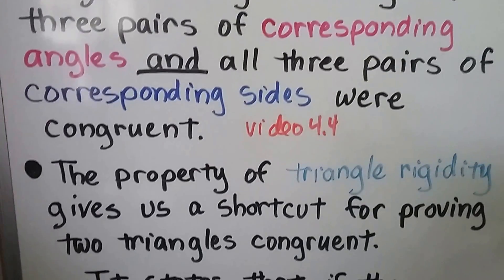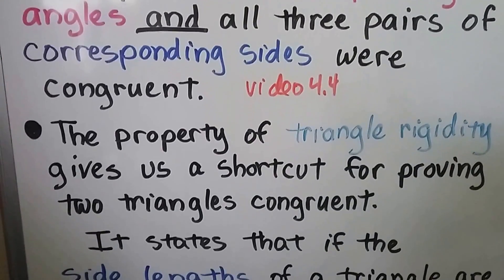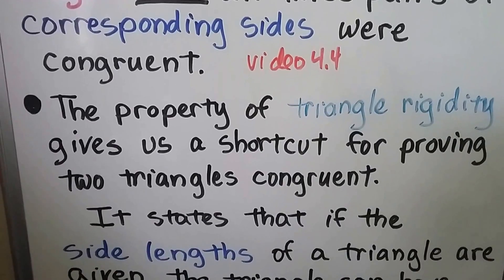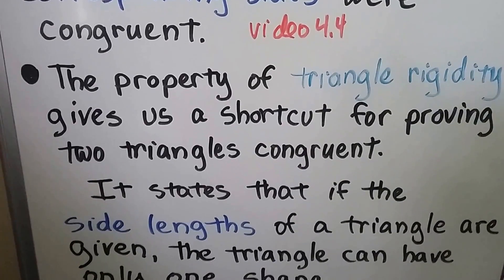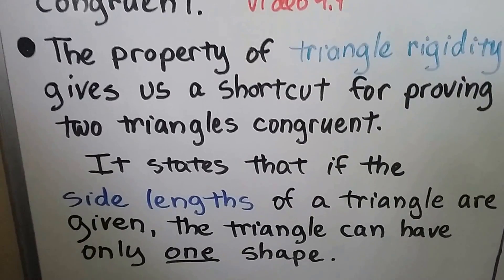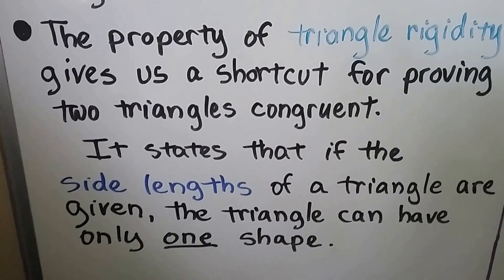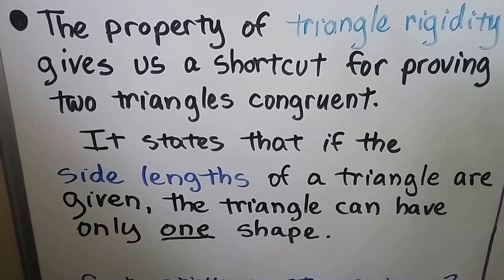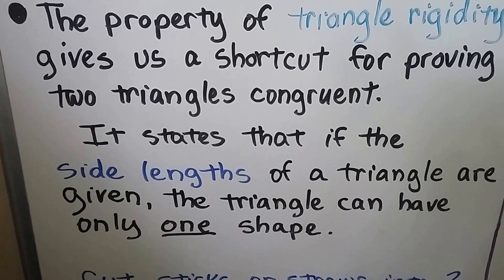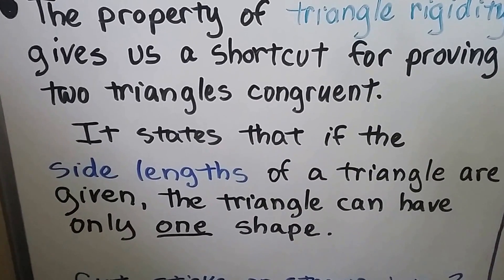The property of triangle rigidity gives us a shortcut for proving two triangles congruent. It states that if the side lengths of a triangle are given, the triangle can have only one shape.